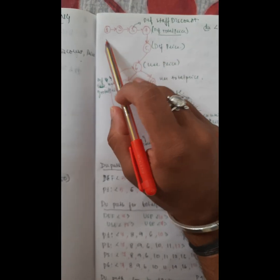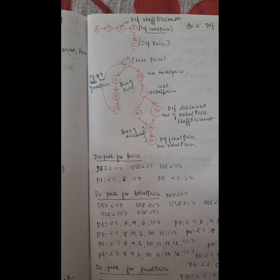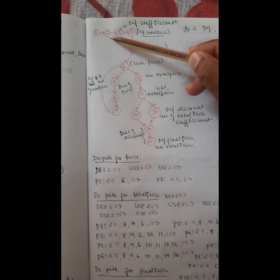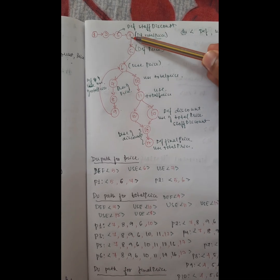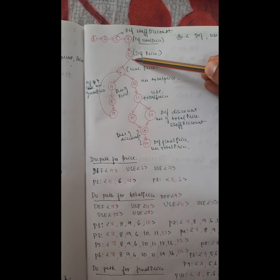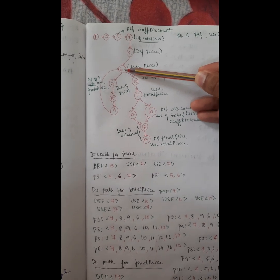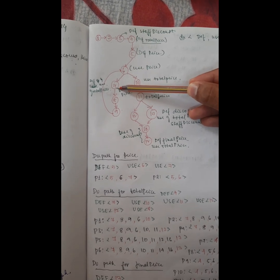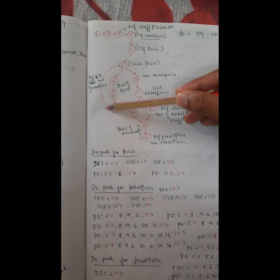This is the program graph. First we have the program start, then we come to defining the variables on the second line. The third line assigns the staff discount value, the fourth line assigns the total price value, then input price. We then come to a while loop: if price is not equal to minus one and it is true, we go to the next line of execution — line seven — which says total price equals total price plus price. Then line eight inputs price, and we come back to the while loop.